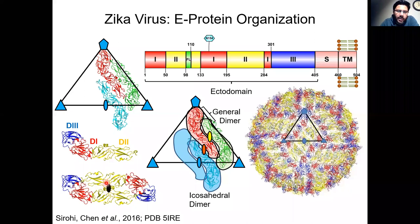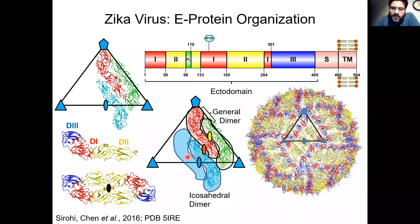Under cellular physiological conditions, the fully folded E-protein assembles into symmetric dimers mainly through the dimerization activity of domain 2. In the context of the virus, there are two kinds of E-protein dimers: the icosahedral dimer, where the two monomers lie right across a crystallographic two-fold axis, and the general position dimer. In the fully assembled flavivirus particles, domain 1 is found clustered around the threefold axis, domain 2 around the twofold axis, and domain 3 clustered mainly around the fivefold axis.